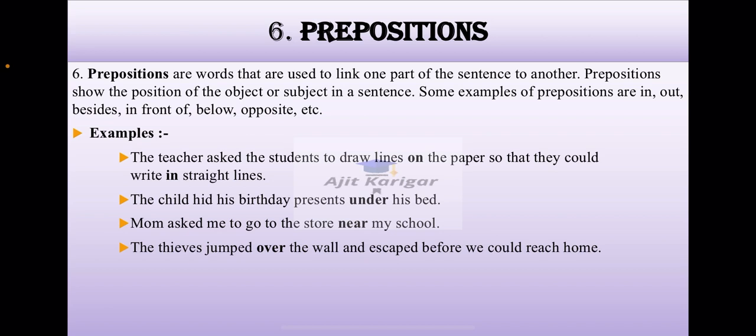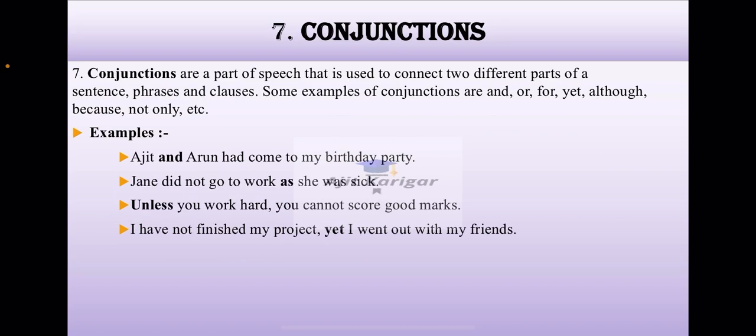The next part of speech is conjunction. Conjunctions are a part of speech that is used to connect two different parts of a sentence, phrases and clauses. Some examples of conjunctions are and, or, for, yet, although, because, not only, etc. These are all the examples of conjunction. Let us see those things in sentences.